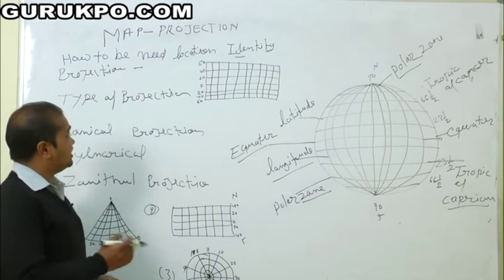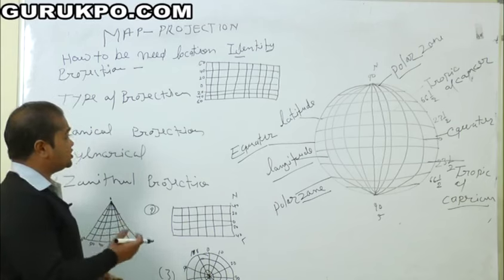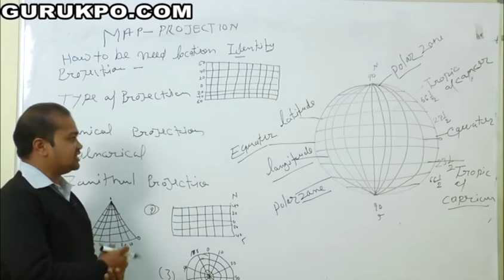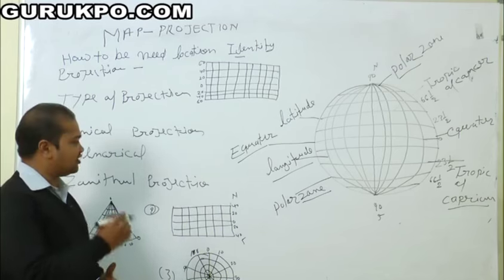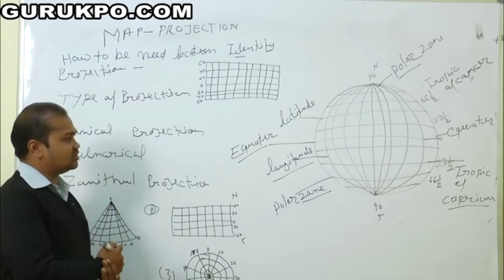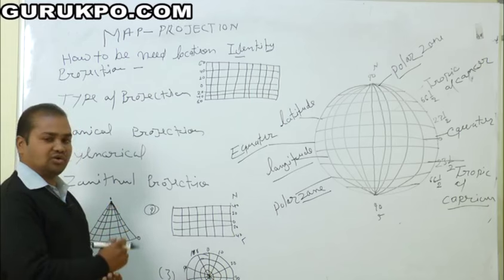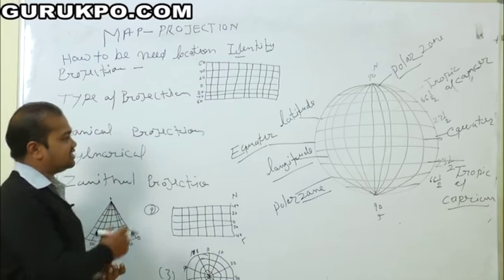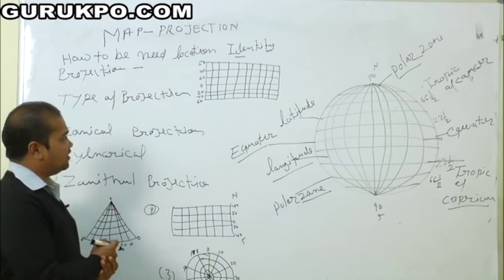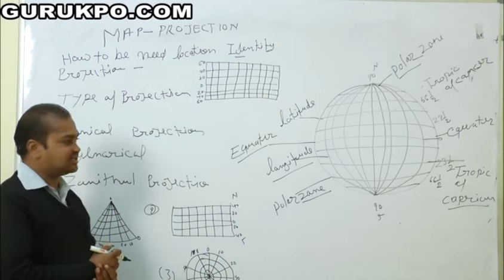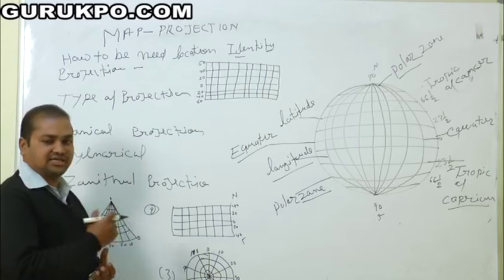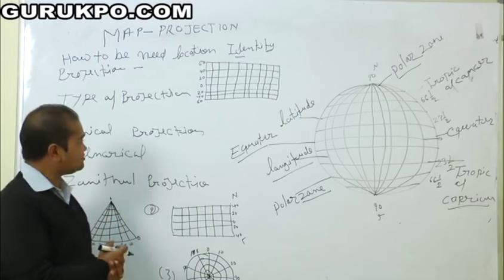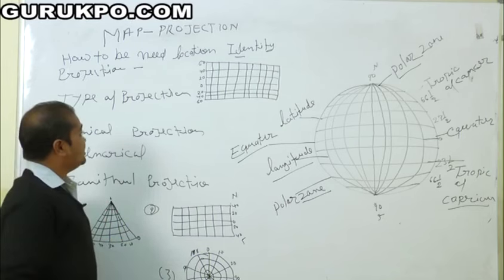The map projection is based on location identity. For all the world, there is a best location identity of North, East, West and South position on a map, on a globe, which is based on the map projection.